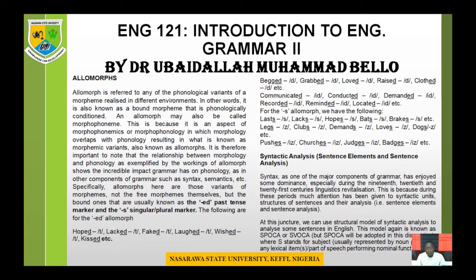The first topic is allomorphs. An allomorph is referred to as any of the final logical variants of a morpheme realized in different environments. In other words, it is also known as a bound morpheme that is phonologically conditioned. To understand allomorphs, one has to first understand what a morpheme is. A morpheme is the smallest meaningful linguistic unit of a word, and morphemes are classified into two: free morphemes and bound morphemes.